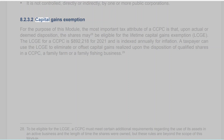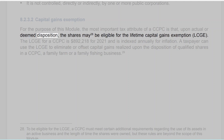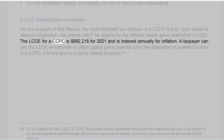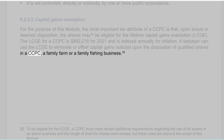8.2.3.2 Capital Gains Exemption. For the purpose of this module, the most important tax attribute of a CCPC is that, upon actual or deemed disposition, the shares may be eligible for the Lifetime Capital Gains Exemption (LCGE). The LCGE for a CCPC is $892,218 for 2021 and is indexed annually for inflation. A taxpayer can use the LCGE to eliminate or offset capital gains realized upon the disposition of qualified shares in a CCPC, a family farm, or a family fishing business.